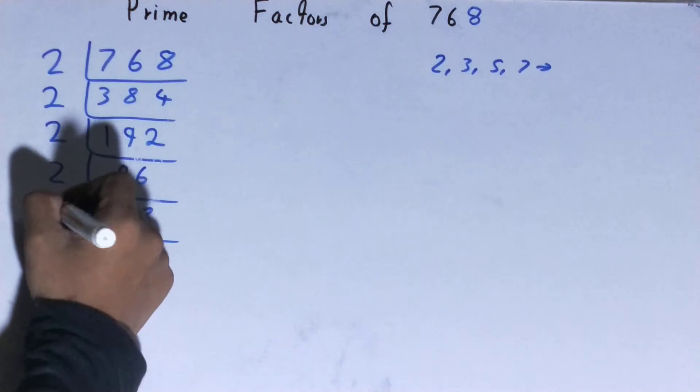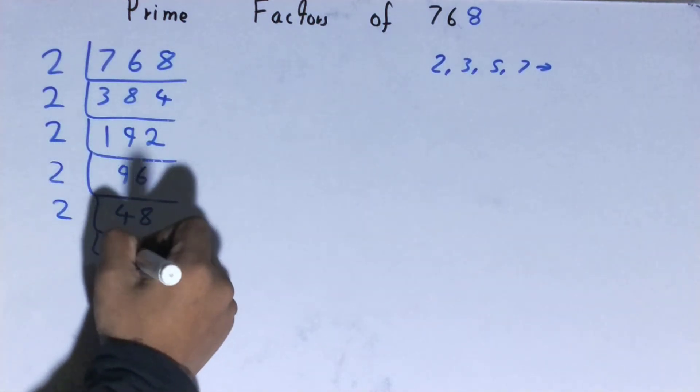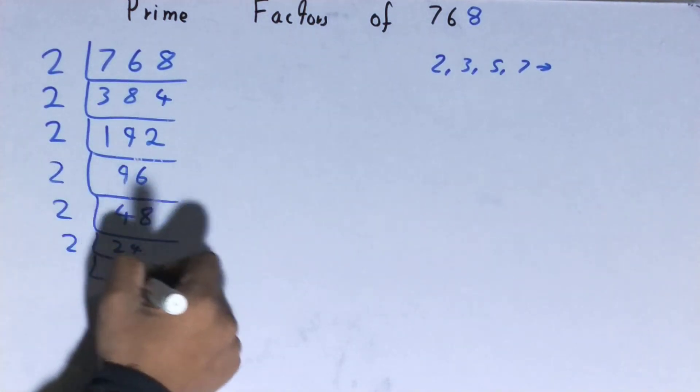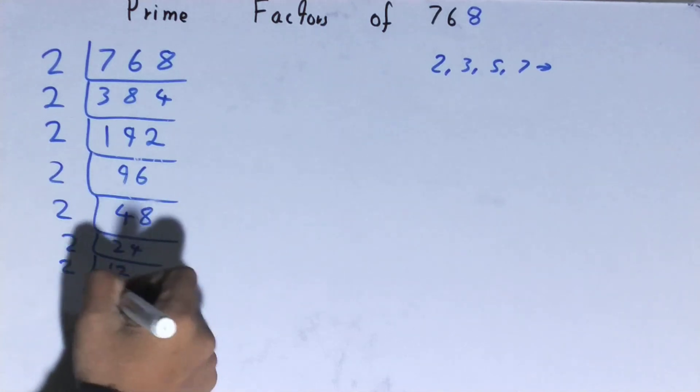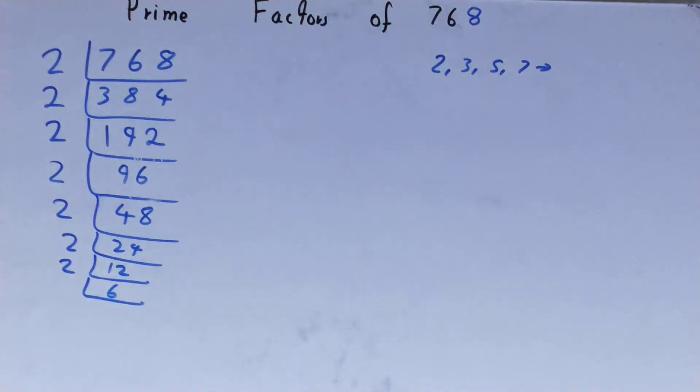24 is also divisible by 2, you'll be left with 12. 12 is also divisible by 2, you'll be left with 6.